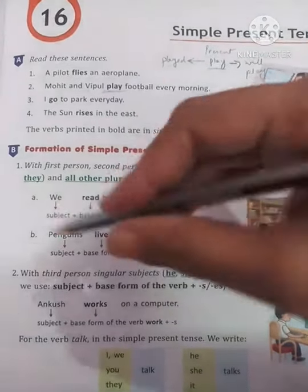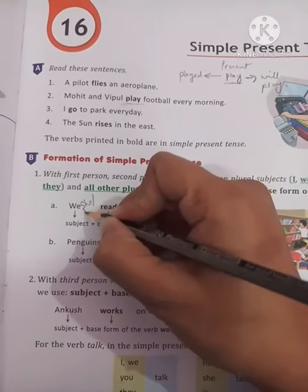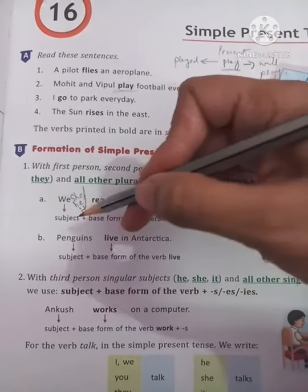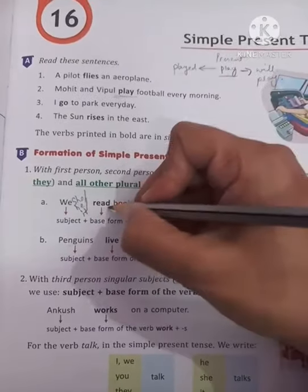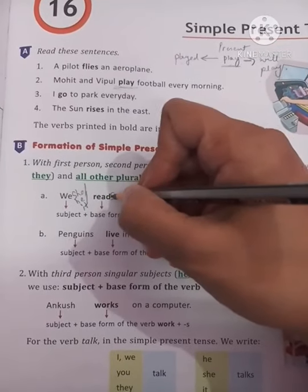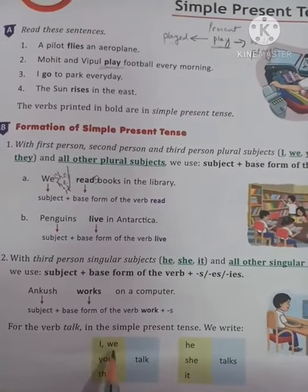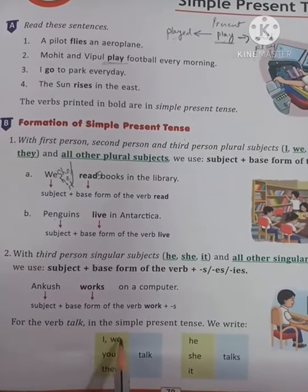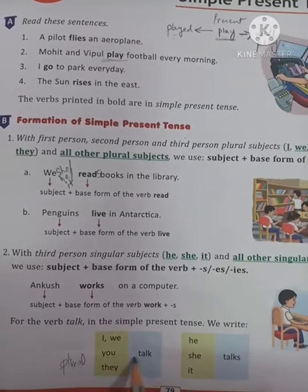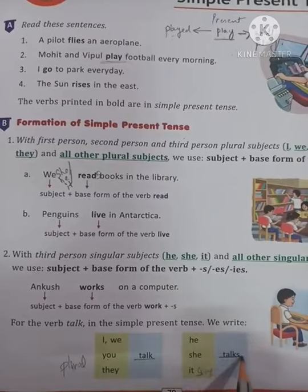Now for singular subjects — he, she, and it — the verb changes. With singular subjects, an 's' is added to the verb form. So it becomes 'she reads', 'he reads'. To summarize: I, we, you, they are all plural and take the base form (e.g., 'talk'), while he, she, it are singular and take the 's' form (e.g., 'talks').